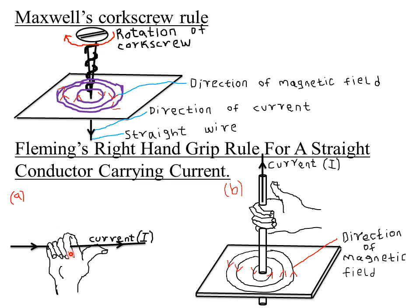The direction of curling of the fingers represents the direction of the magnetic field. So in this case the magnetic field moves in the direction of the fingers. Remember it must be the right hand — if you try the same rule using the left hand, the direction will actually be opposite. You must use the right hand.